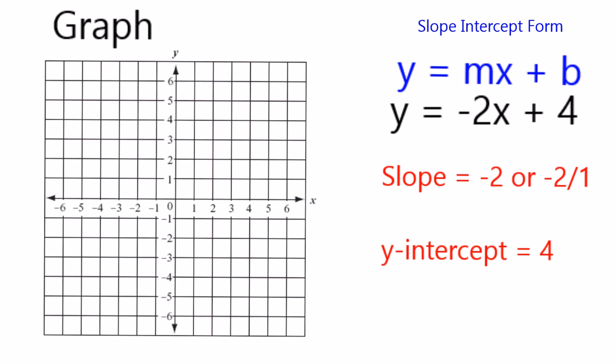Now to graph it, I'm going to start with my y-intercept, which we said is 4, so it crosses the y-axis at 4. From there, my slope tells me I need to go down 1, 2, and over 1.